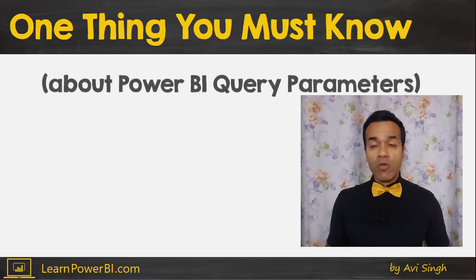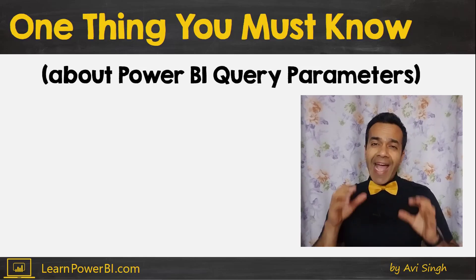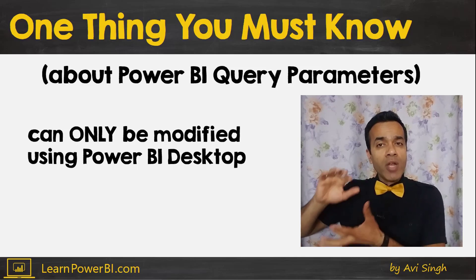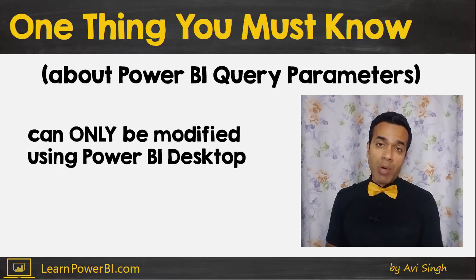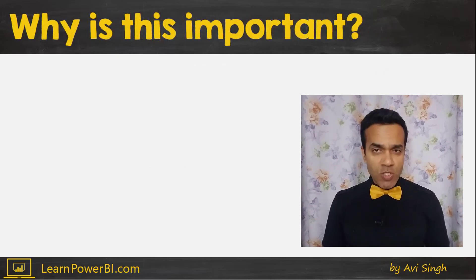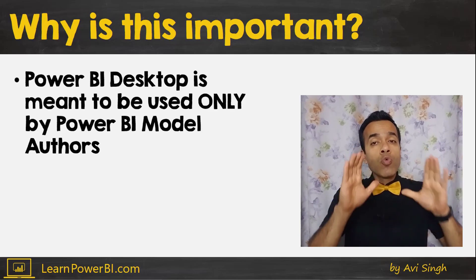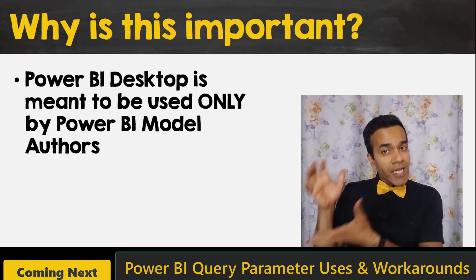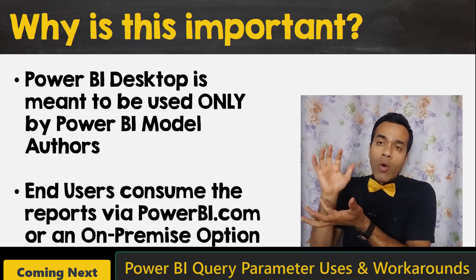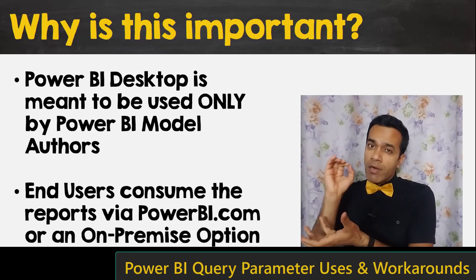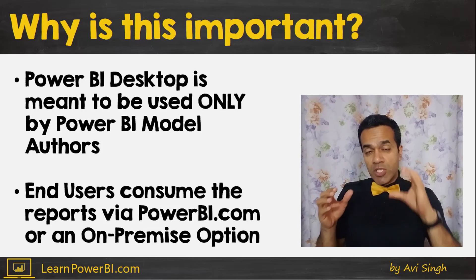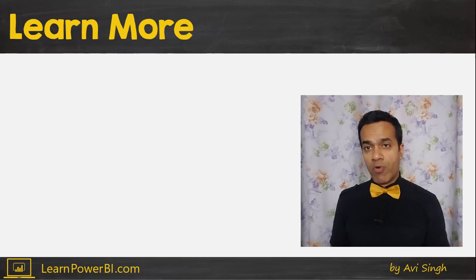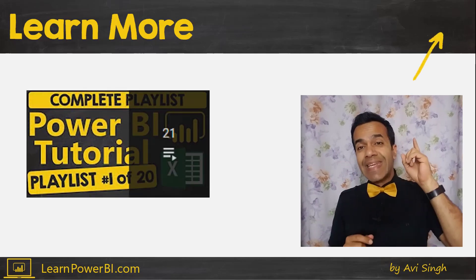There is one thing you must understand when using Power BI parameters in the query editor. As of now, these parameters can only be modified using Power BI Desktop. There is no way for users to modify a parameter on PowerBI.com where they are viewing the Power BI reports. As far as Microsoft is concerned, Power BI Desktop is meant to be used only by Power BI model authors — end users are not supposed to use this tool. End users consume reports via PowerBI.com or an on-premise option, and there they currently cannot modify these query parameters. If you want to learn more about the author-publish-consume approach, watch my complete Power BI tutorial linked here and in the notes below.